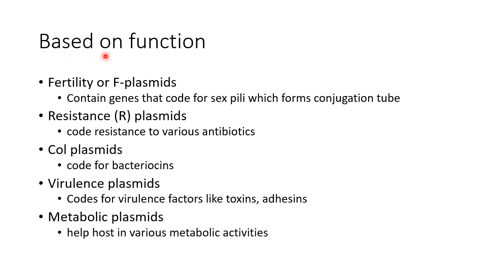Based on function, plasmids are classified into: fertility or F plasmids, which contain genes that code for sex pili forming the conjugation tube; resistance or R plasmids, which code for resistance to various antibiotics; Col plasmids, which code for bacteriocins; virulence plasmids, which code for virulence factors like toxins and adhesins; and metabolic plasmids, which help the host in various metabolic activities.